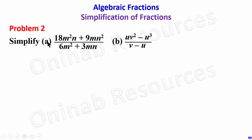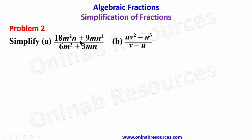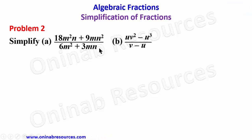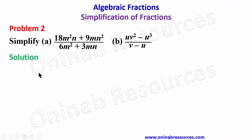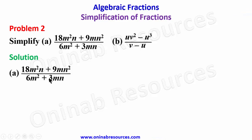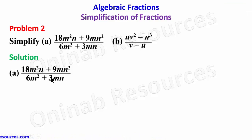We go to Problem 2. Simplify: (a) (18m²n + 9mn²) over (6m² + 3mn), and (b) (uv² − u³) over (v − u). For part (a), we are going to factorize the numerator and denominator and see what cancels out.